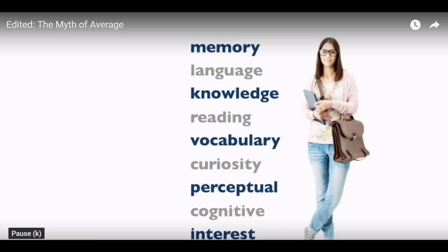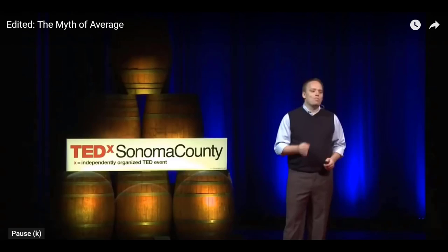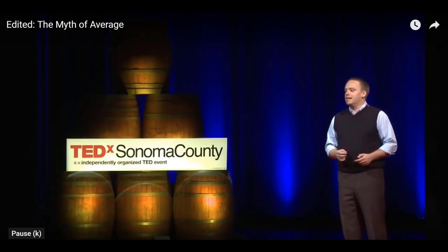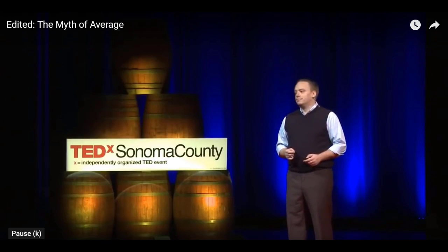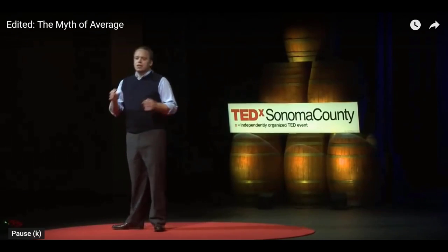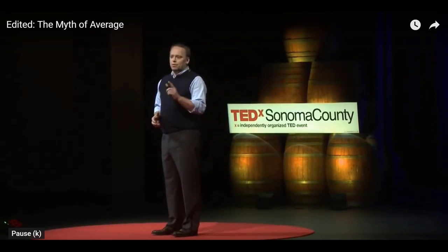And just like size, each student — every single one of them — has a jagged learning profile, meaning they have strengths, they're average at some things, and they have weaknesses. We all do. Even geniuses have weaknesses. But if the fighter pilot example has taught us anything, it's this: if you design those learning environments on average, odds are we've designed them for nobody. So the real question is: how do we get these adjustable seats for learning in the hands of every student as fast as possible without spending more money?